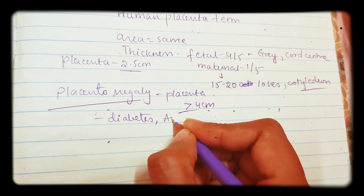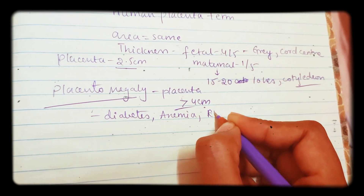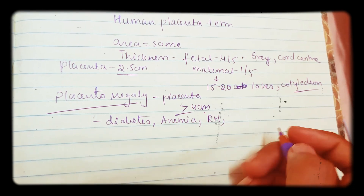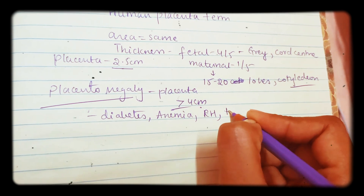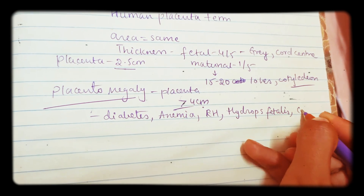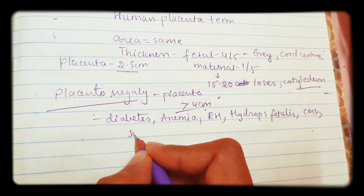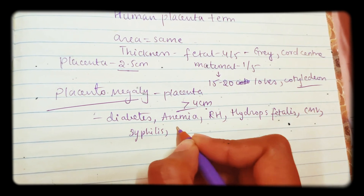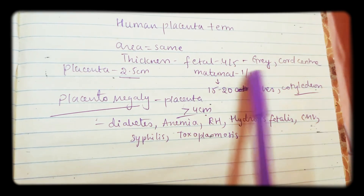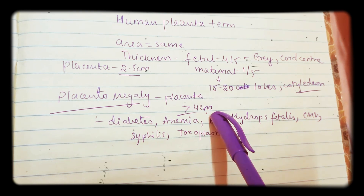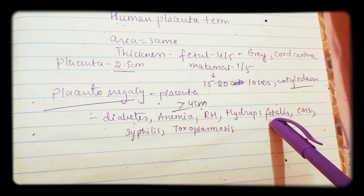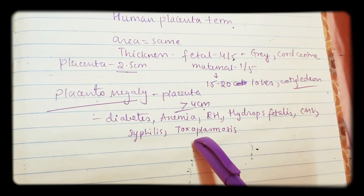What are the causes of placentomegaly? In the case of diabetes you have placentomegaly, and also in severe anemia, in Rh incompatibility, in hydrops fetalis, and also with some infections like cytomegalovirus, syphilis, and toxoplasmosis. So these are all the different causes of placentomegaly where the placenta is greater than 4 centimeters.